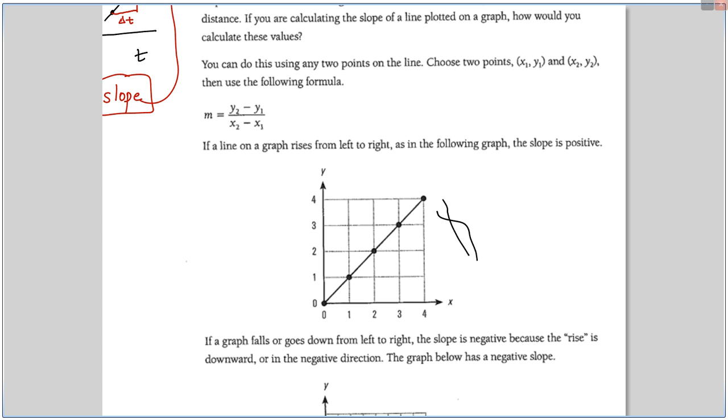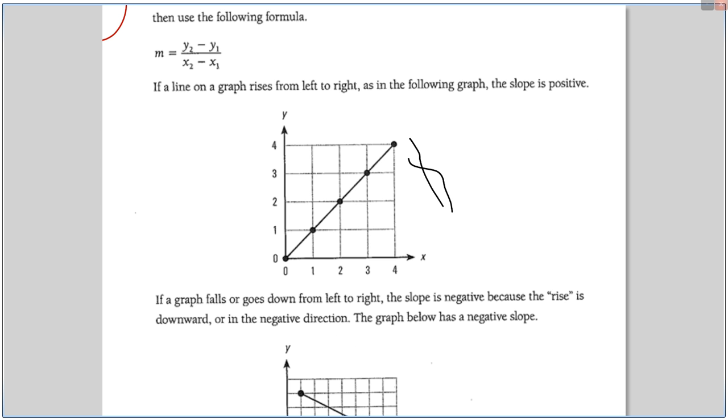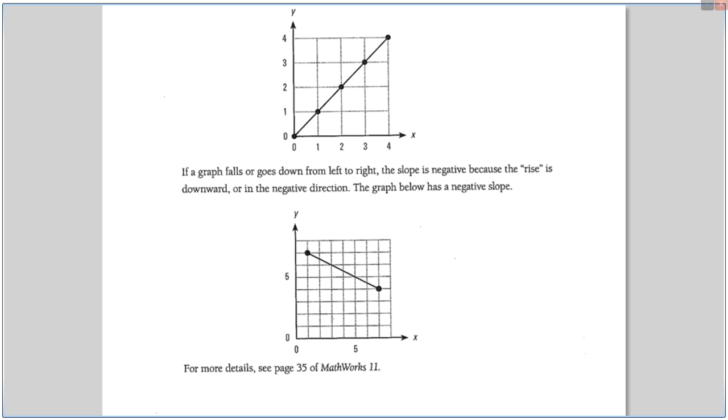Taking a look at this graph, if a line on a graph rises from left to right, as in the following graph, we'd say the slope is positive. The other situation is the one underneath. If the graph falls from right to left. So, like in science class, we always think about the x-axis. Remember, x-axis is left and right. We always think of that as like time.